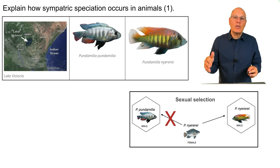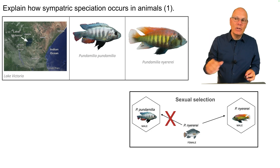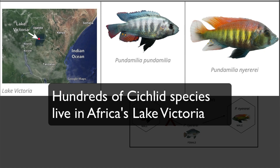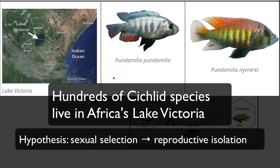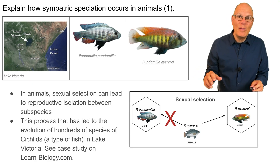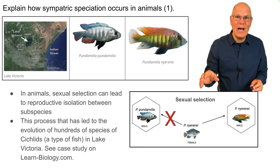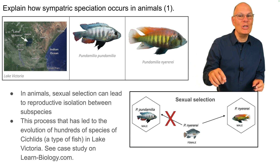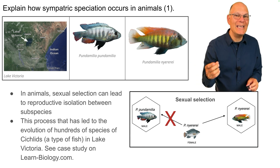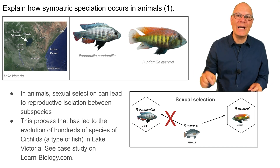One example of sympatric speciation in animals involves the hundreds of species of fish called cichlids that live in Africa's Lake Victoria. What is thought is that sexual selection has led to reproductive isolation between the subspecies. That's been experimentally verified — it's a very complex story, and I encourage you to look at the case study on learn-biology.com.